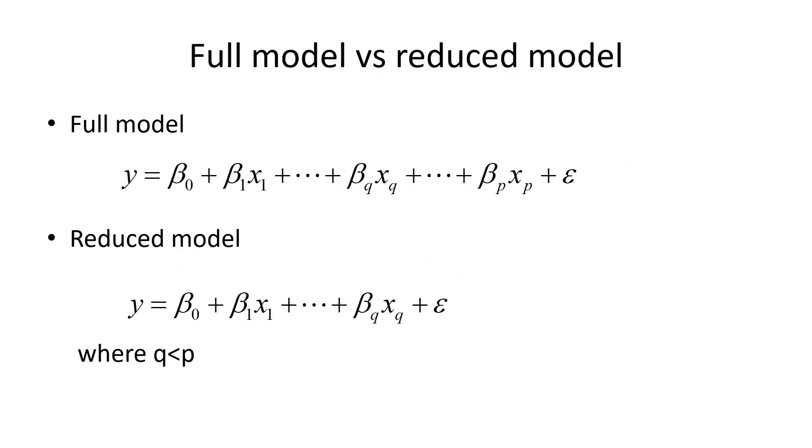So the setup is as follows. We have a full model, as usual, with p variables. And I'm introducing the notation here that x_q, so q comes before p, q is smaller than p. And then I'm deleting the variables in the joint hypothesis that come after q. So the reduced model only has q variables. The ordering doesn't matter because I can always reorder the variables such that the additional variables that I want to set to zero come after the q's variable.